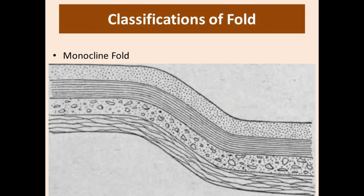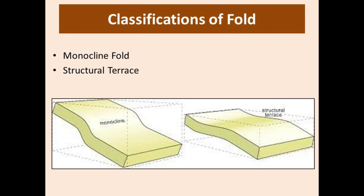The monocline fold is one in which strata assume a steeper dip; it is formed by vertical movement of rock beds lying at different levels, separated by a limb showing steep inclination. A structural terrace is one in which beds assume a horizontal dip — the dipping strata become horizontal at a particular place and then continue with their original dip.